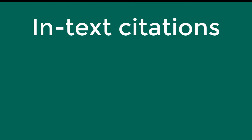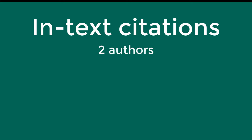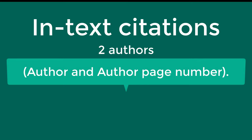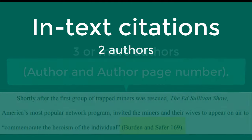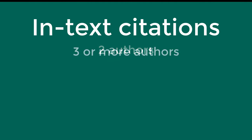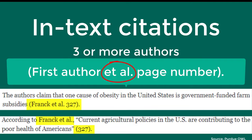There are also differences for how to list authors depending on the number of authors. If the material you are citing has two authors, you need to include both authors' last names with the word 'and' in between them, then include the page number. If the material you are citing has three or more authors, only list the first author's name, then include the words 'et al.' followed by the page number.